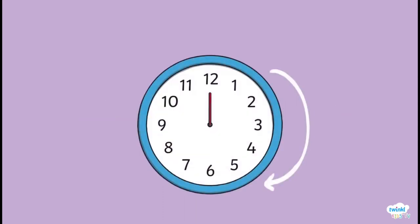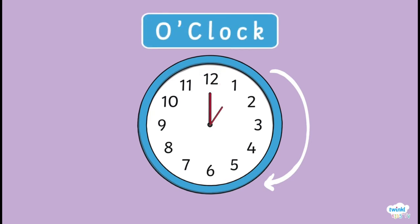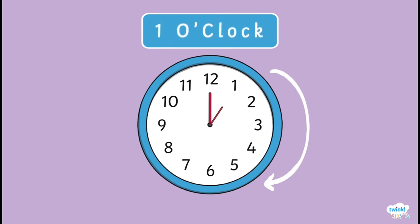What's the time when the longer hand, the minute hand, is pointing to the number 12 and the smaller hand, the hour hand, is pointing to one of the hour numbers? We call this o'clock. For example, when the minute hand points to 12 and the hour hand points to one, we say it's one o'clock.